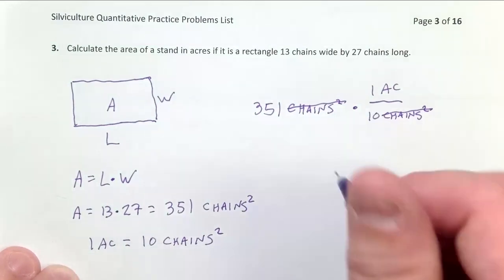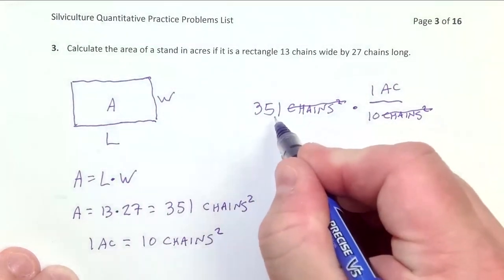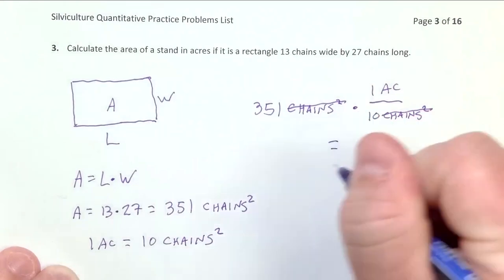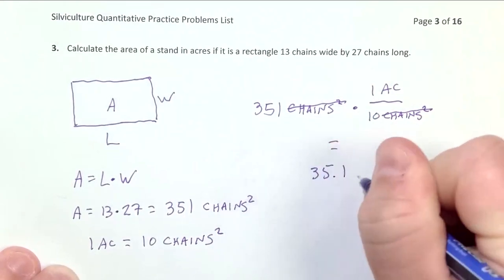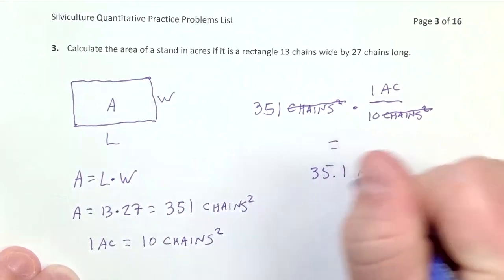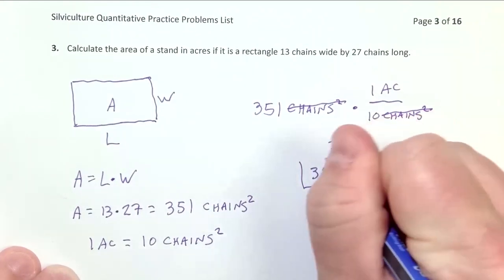And so we probably don't even need to calculate this, just move the decimal point over one, and so this equals 35.1 acres. And that's our answer.